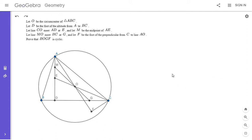Alright, so I'm going to go over the solution. We have triangle ABC with circumcenter O. D is the foot of the altitude from A to BC. CO meets AD at point E. M is the midpoint of AE. MO meets BC at point G, and F is the foot of the perpendicular from C to line AO. We want to show that BOGF is cyclic.